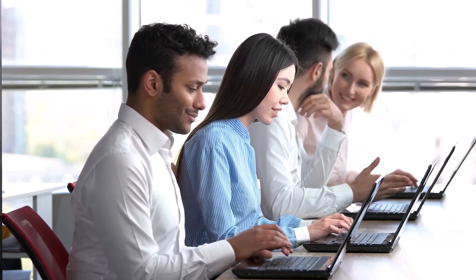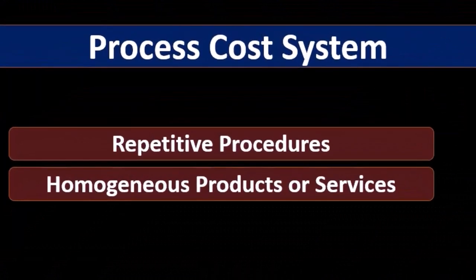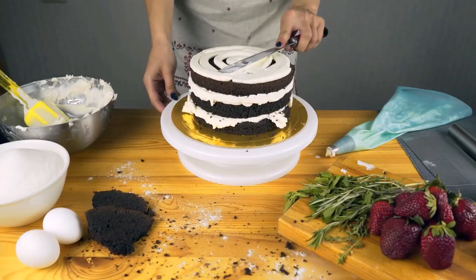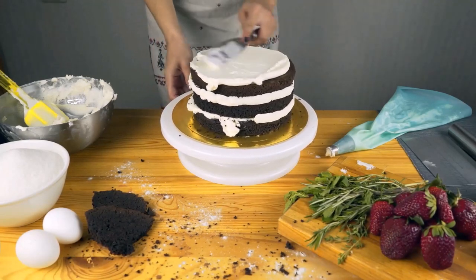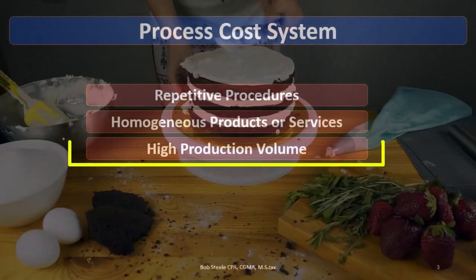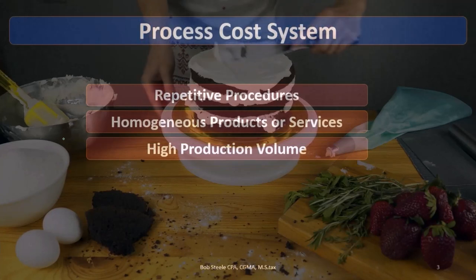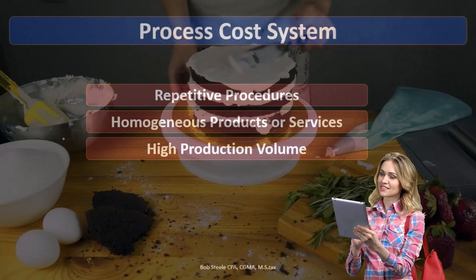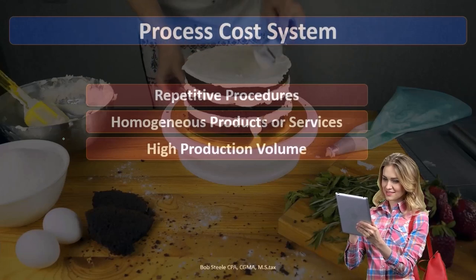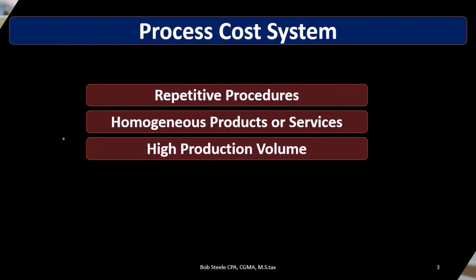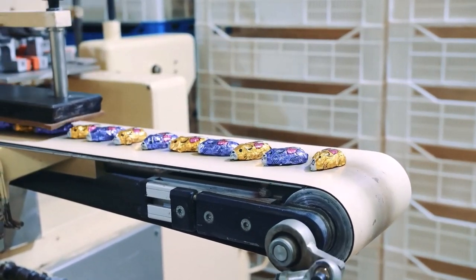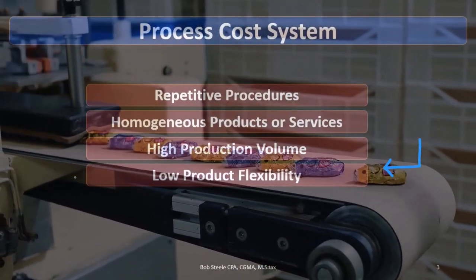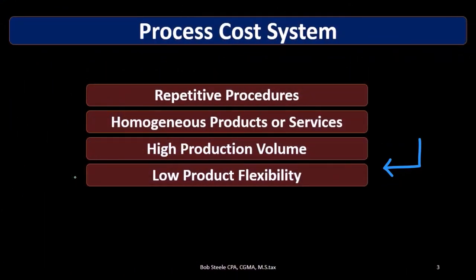We're going to have homogeneous products or services as opposed to heterogeneous. The key point to focus on is that these are not custom products — they're all the same in nature, and everything else derives from that. We're going to have high production volume; that's the point of making everything the same. If we try to customize the caramels, it becomes difficult to automate, so by keeping them all the same we achieve high production volume and lower cost, with low production flexibility.